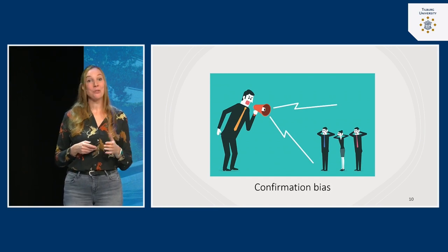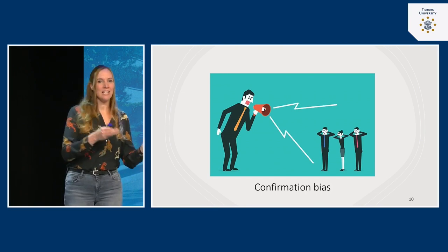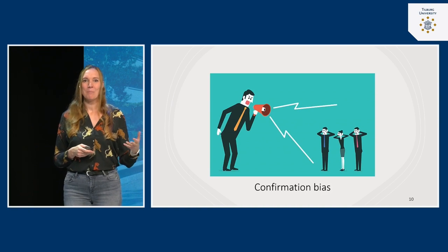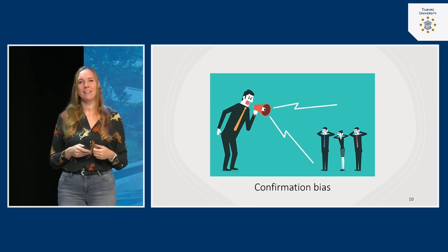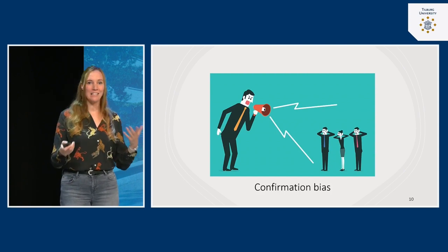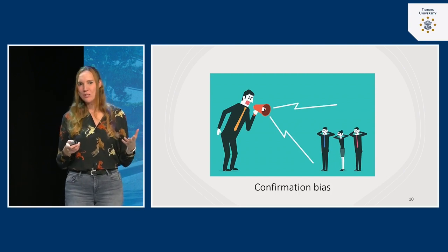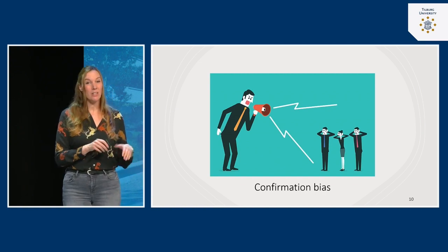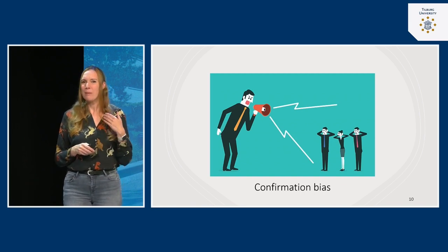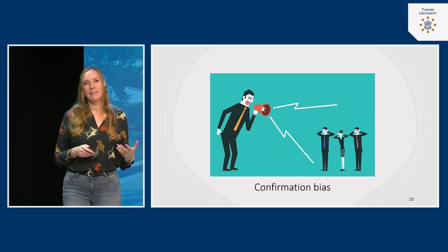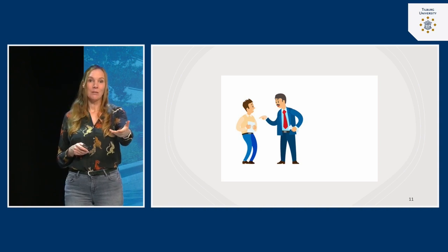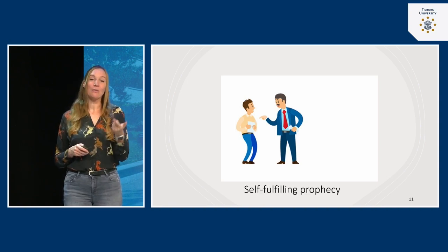Eventually you have a meeting with the new boss. Given your pre-existing belief that they're a bully, are you going to be open and friendly? Probably not. You'll likely be cold, distant, maybe even a little unfriendly. Your new boss will then respond to your unfriendliness in kind — and this is called a self-fulfilling prophecy.